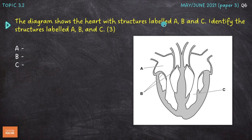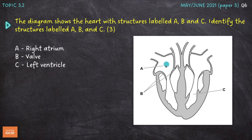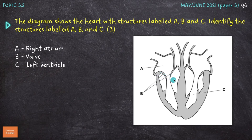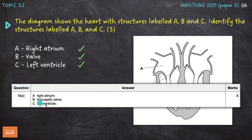The diagram shows the heart with structures labelled A, B, and C. Identify the structures for three marks. A is the right atrium — remember that as we look at a diagram of the heart, the left side as it appears is actually the right side of the heart, so we need to imagine it's our heart facing outwards from the screen. B is a valve — we could be specific and say the tricuspid or atrioventricular valve, but 'valve' is enough for a mark. C is the left ventricle. The mark scheme confirms valve was sufficient, but tricuspid would also have scored.